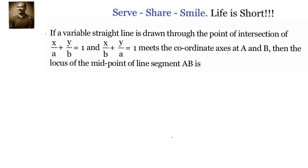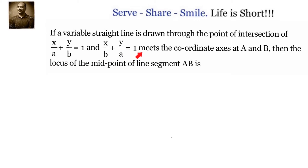If a variable straight line is drawn through the point of intersection of x/a + y/b = 1 and x/b + y/a = 1, and meets the coordinate axes at A and B, then the locus of the midpoint of the line segment AB is what we need to find.